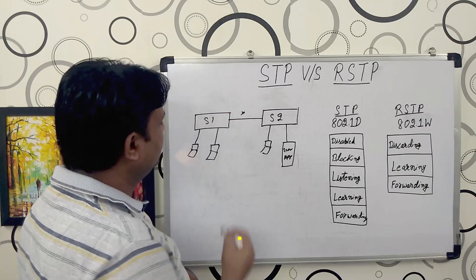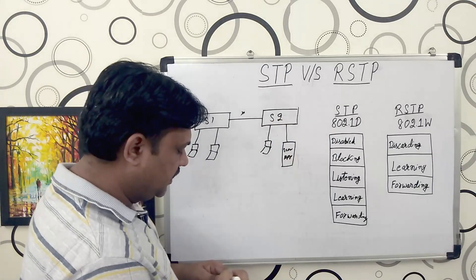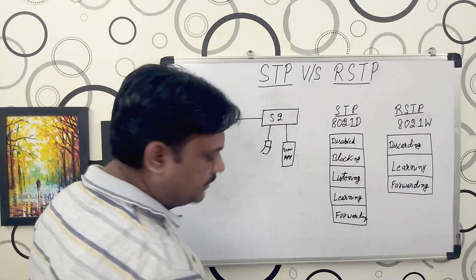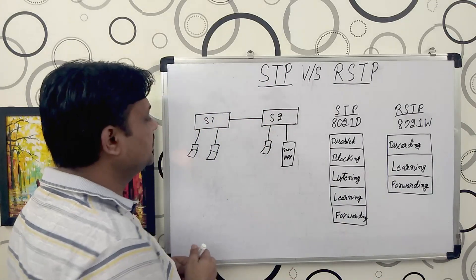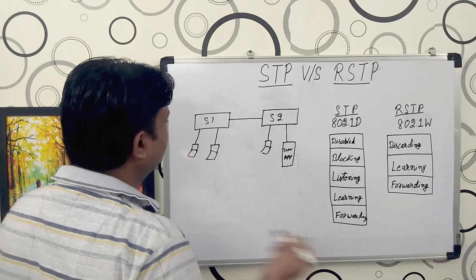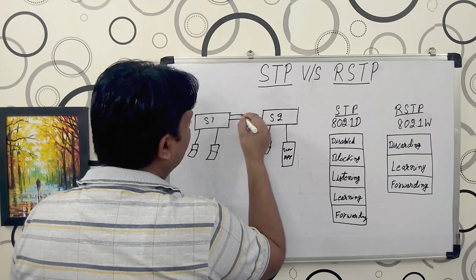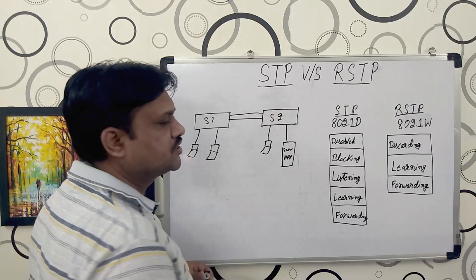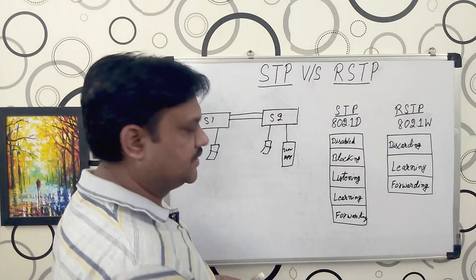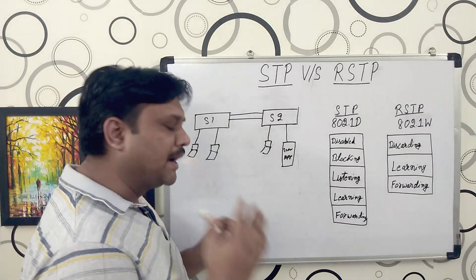The moment this link goes down, the users connected to Switch Number One will not be able to access the server. So as a network engineer, what I have done is connected one more cable between Switch Number One and Switch Number Two to provide redundancy.